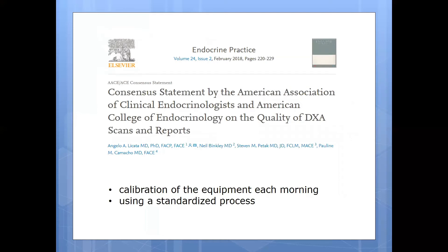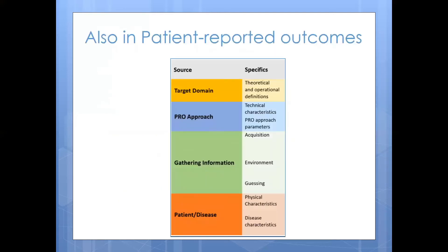When this analysis is done for DEXA, a recommendation can emerge — for example, how to improve acquisition and interpretation of data from a DEXA scan, such as calibrating the equipment each morning or using a standardized process. Sources of variability also extend into all other types of outcome measurement. We're asking groups — for example, those working with patient-reported outcomes — to think through these different sources of potential variability and see if they are at play with the instrument being considered.